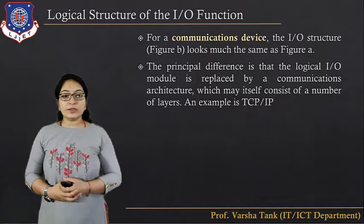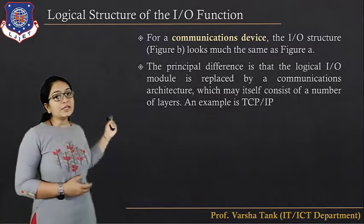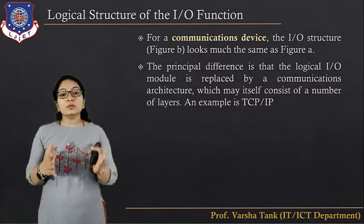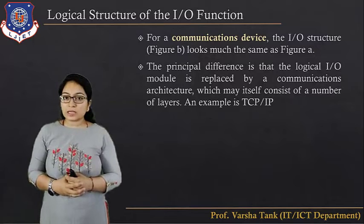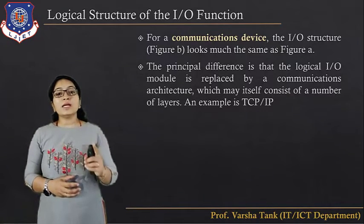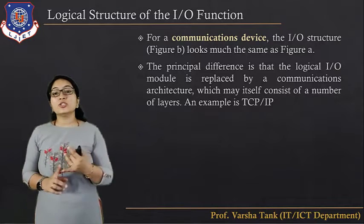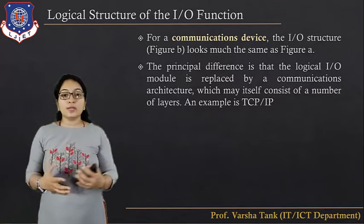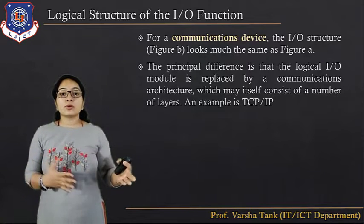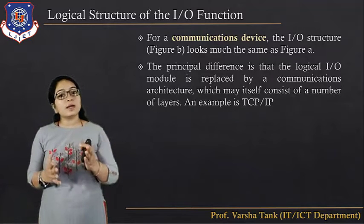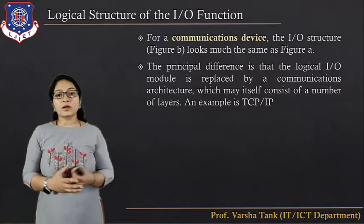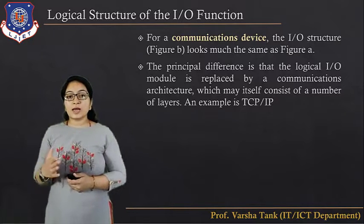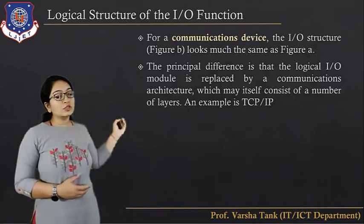The next type is the communication device or communication port. For a communication device, the IO structure looks much the same as a local peripheral device, but with one difference: the logical IO module is replaced by the communication architecture, which may itself consist of many layers — for example, TCP/IP, the Transmission Control Protocol and Internet Protocol, which have their own layers as studied in communication networks.